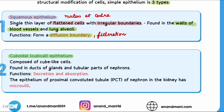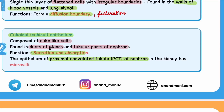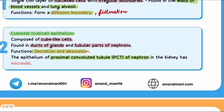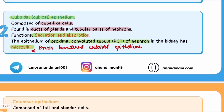The second type is cuboidal epithelium. These cells are cube-like and are found in gland ducts and tubular parts like the nephron. Their function is secretion and absorption. An important example is PCT — proximal convoluted tubules of the nephron. When microvilli are present in the PCT, it is called brush-bordered cuboidal epithelium. You will find questions from this topic.